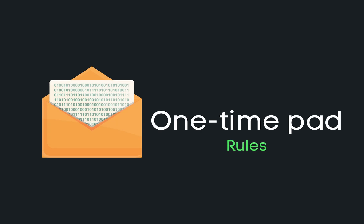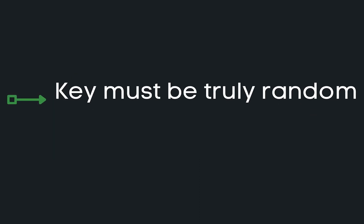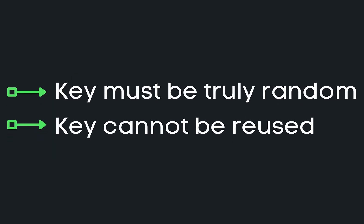The one-time pad crypto system has rules, and if we don't abide by them, vulnerabilities will occur. The rules are: one, the key used in the encryption process must be truly random, and two, the key can only be used once. This means you can't use the same key to encrypt two messages.